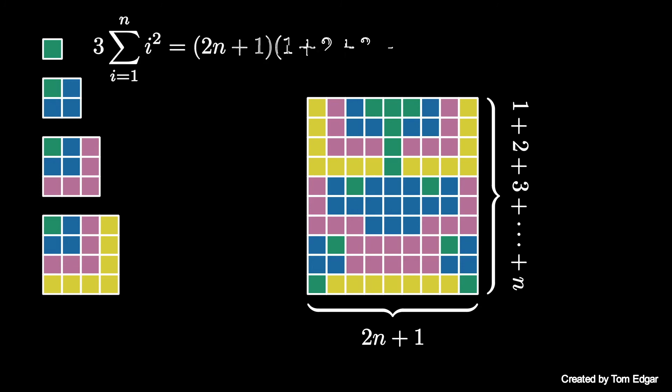Applying a known sum formula for the sum of integers and then dividing by 3 yields a formula for the sum of the first n squares.